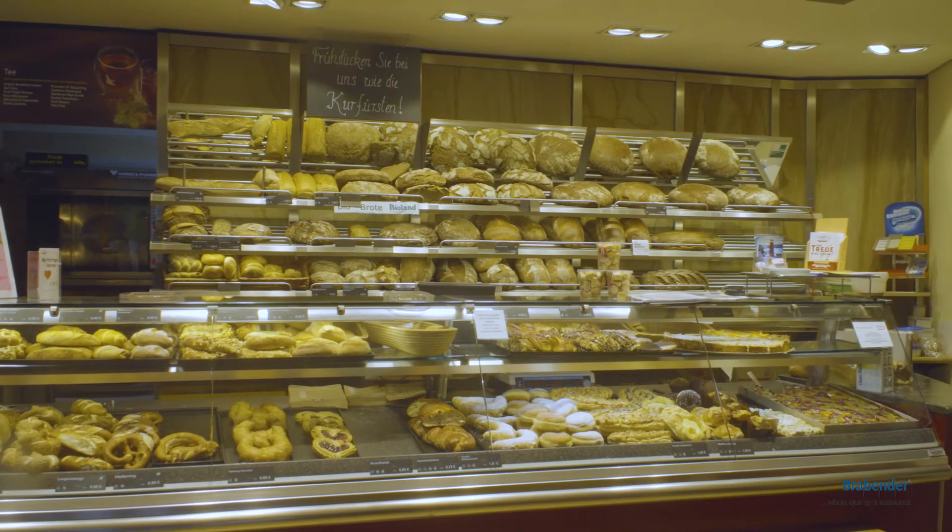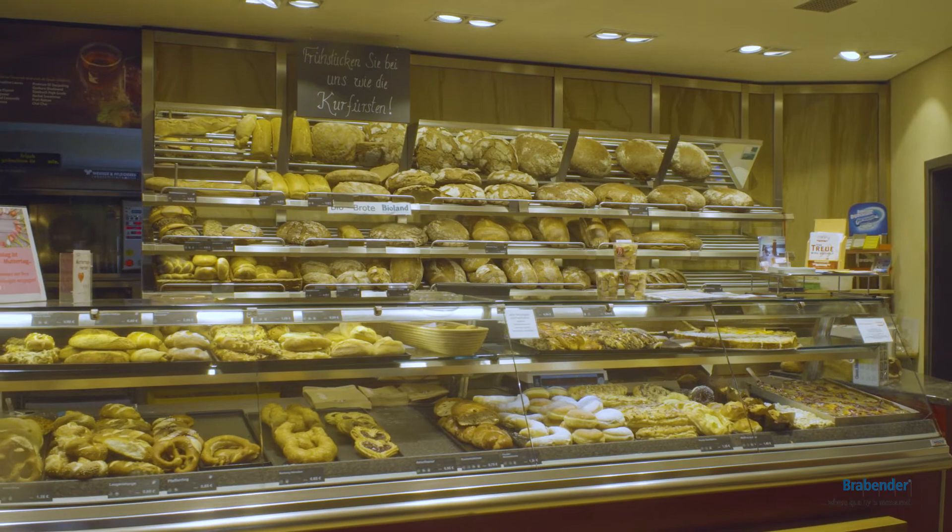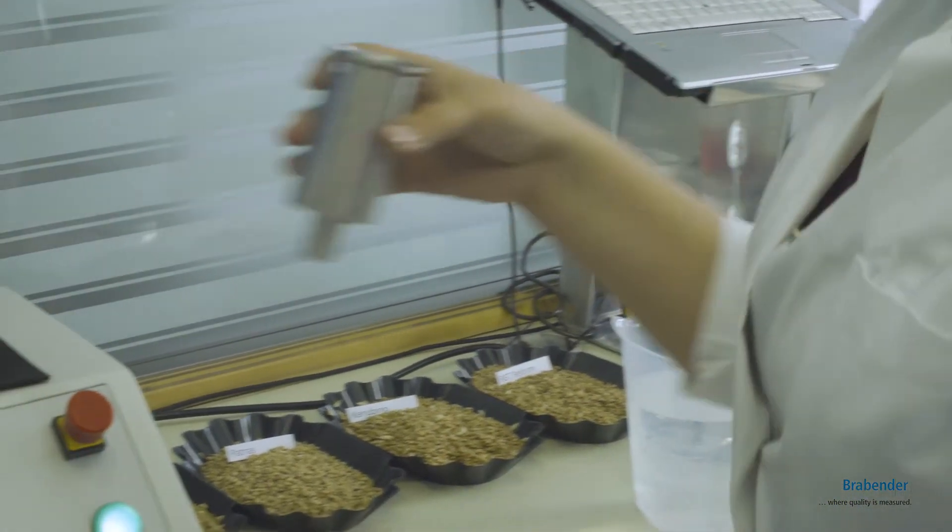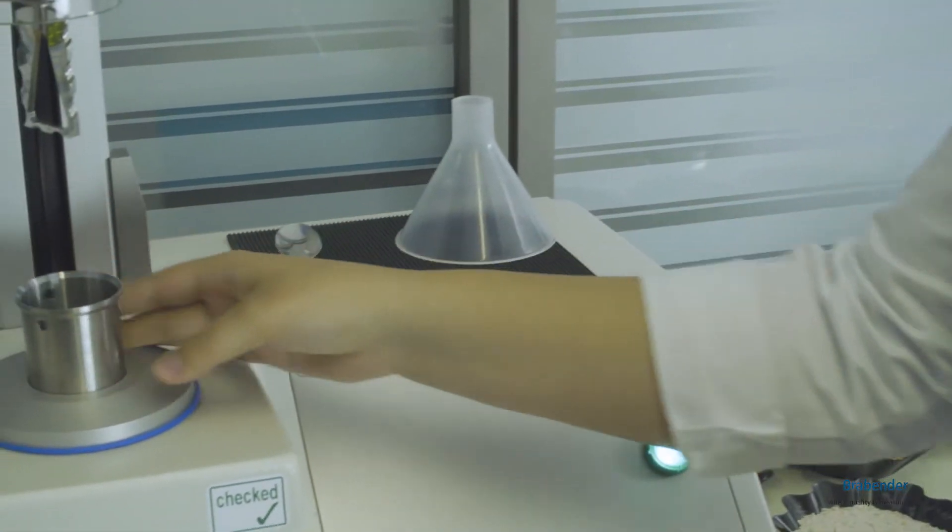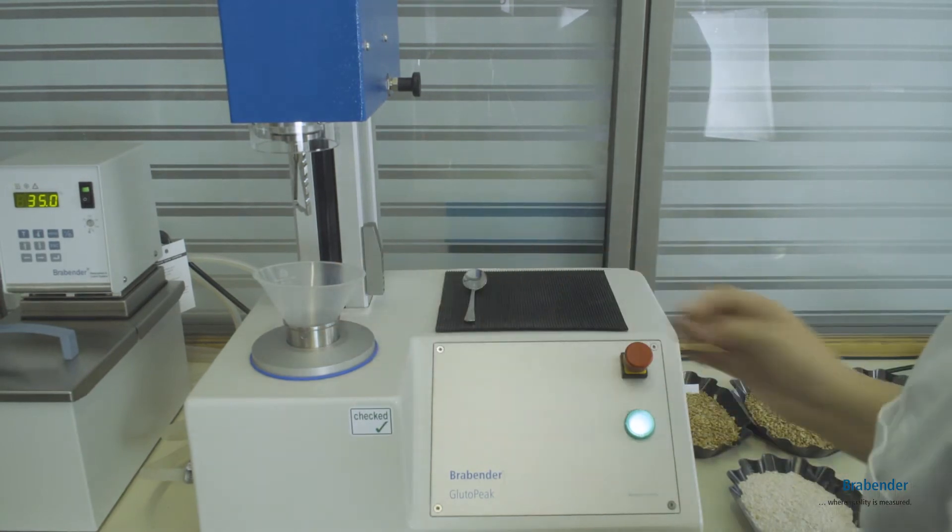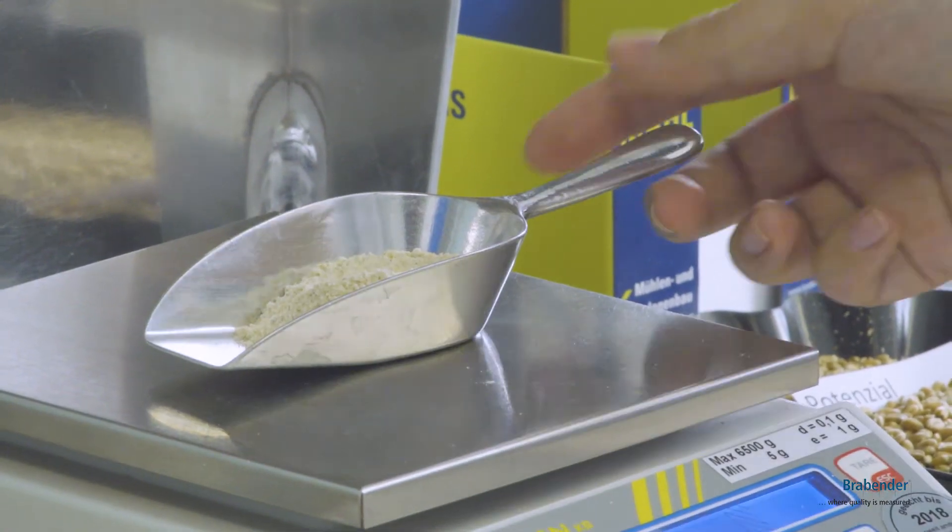As well as specialized wholesale traders for bakeries and pastry shops. In order to promptly evaluate the delivered grain batches or loads during harvest time, the Brabender Gluto Peak has complemented the laboratory of the Wiesnet Mill since summer 2016.